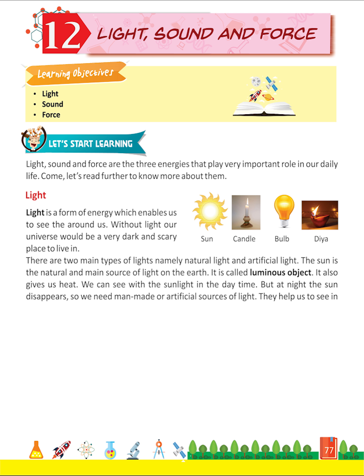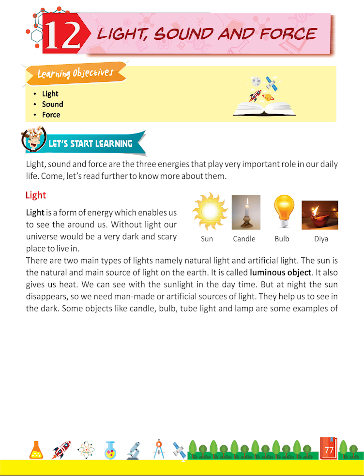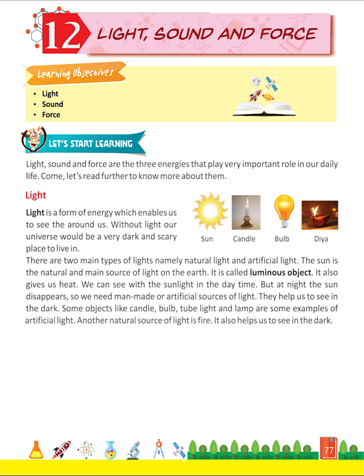Artificial sources of light help us to see in the dark. Some objects like candle, bulb, tube light and lamp are examples of artificial light. Another natural source of light is fire. It also helps us to see in the dark.